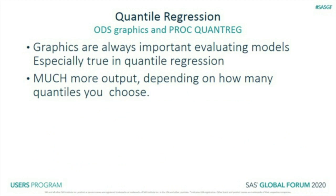Graphics are always important in any kind of model evaluation, including regular regression. But in quantile regression you often have many regressions — if you do 10 regressions on birth weight, you'll have 10 times as much output. You need graphics not just to check assumptions as in usual models, but to summarize what you've got.